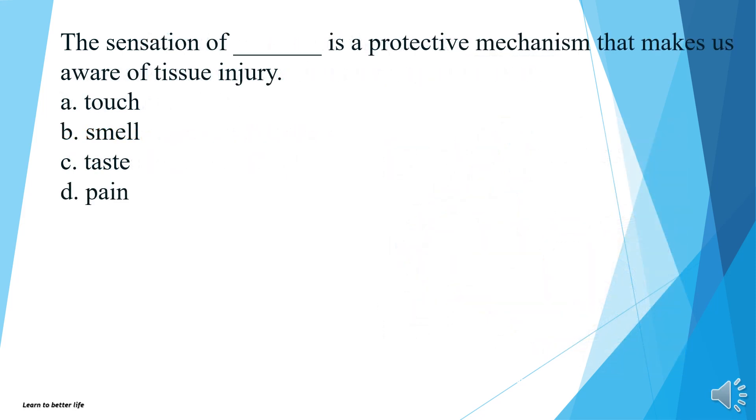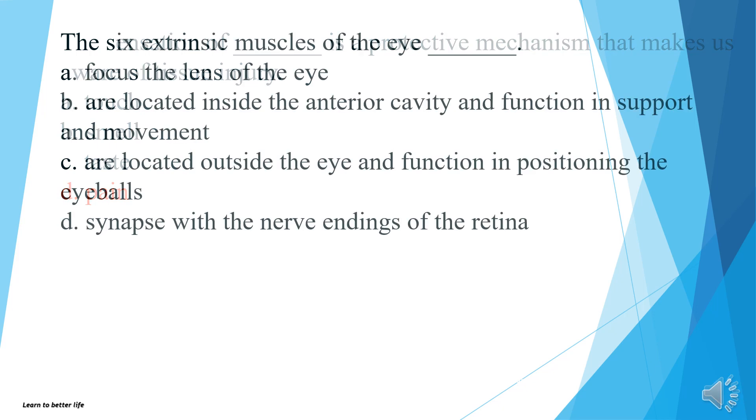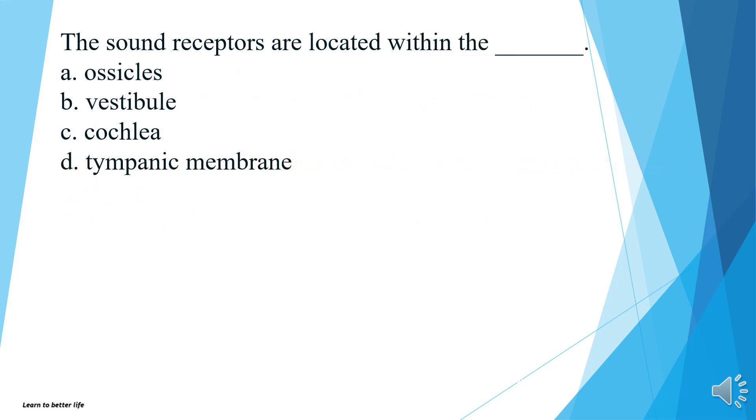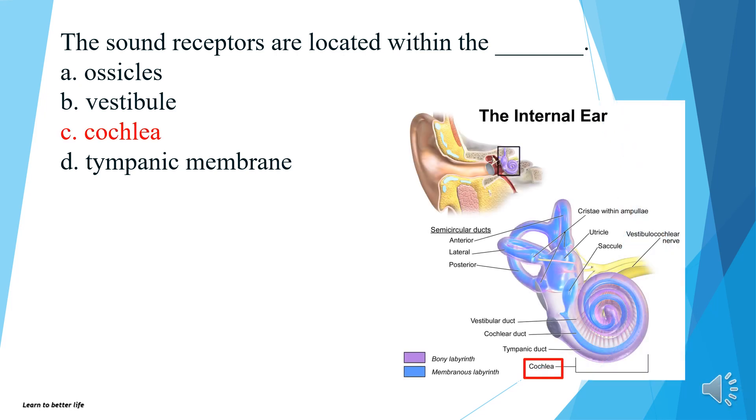The sensation of pain is a protective mechanism that makes us aware of tissue injury. The six extrinsic muscles of the eye focus the lens of the eye, are located inside the anterior cavity and function in support and movement, are located outside the eye and function in positioning the eyeballs, or synapse with the nerve endings of the retina? The answer is C, are located outside the eye and function in positioning the eyeballs. The sound receptors are located within the ossicles, vestibule, cochlea, or tympanic membrane? The answer is C, cochlea.